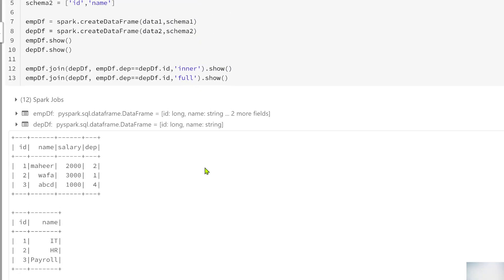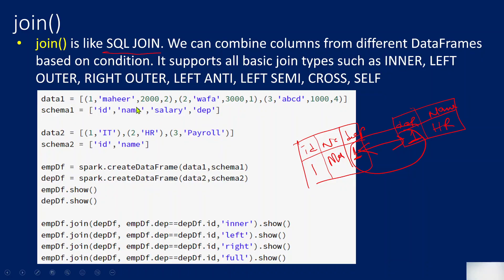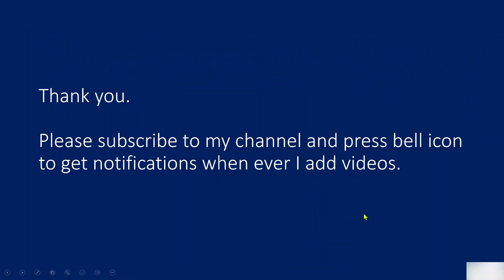That's how inner join, left join, right join, and full join work in PySpark. There are a couple of other joins — like left anti join, self join, and left semi join — which we'll discuss in the next video. Thank you for watching; please subscribe to the channel and press the bell icon to get notifications whenever new videos are added.